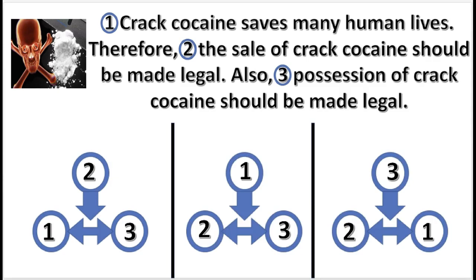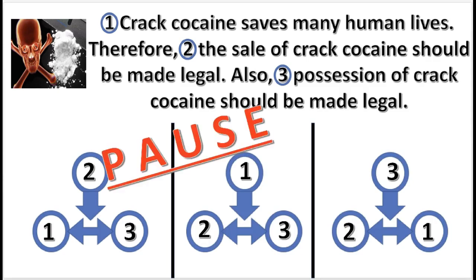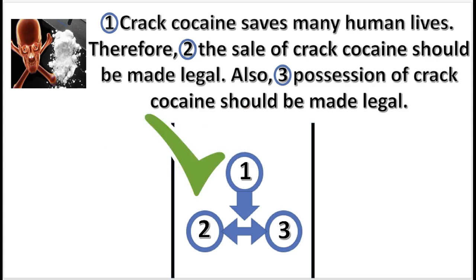Now, choose the correct sequence of numbers in the argument. Press pause — the answer is in 3, 2, 1. Ding! That is correct. 2 and 3 form a multiple conclusion supported by 1.